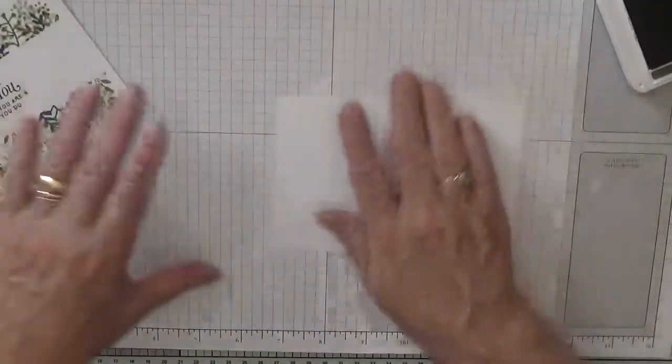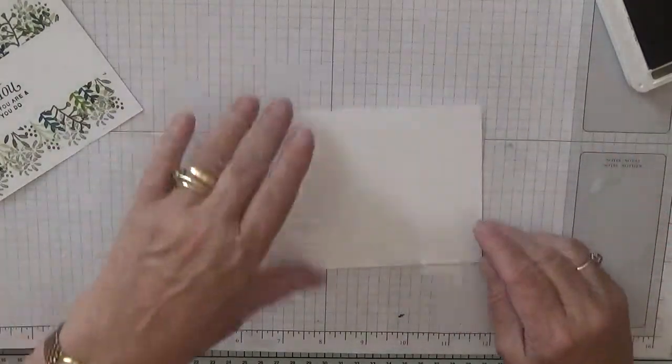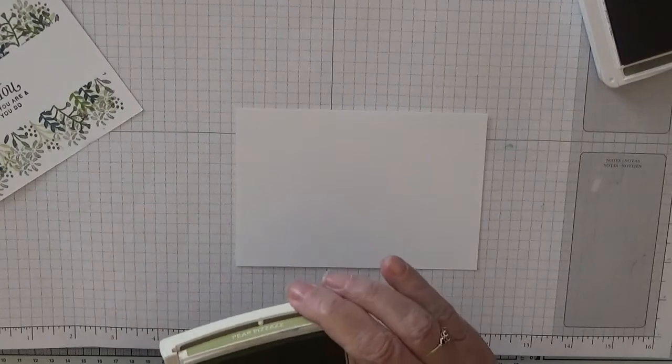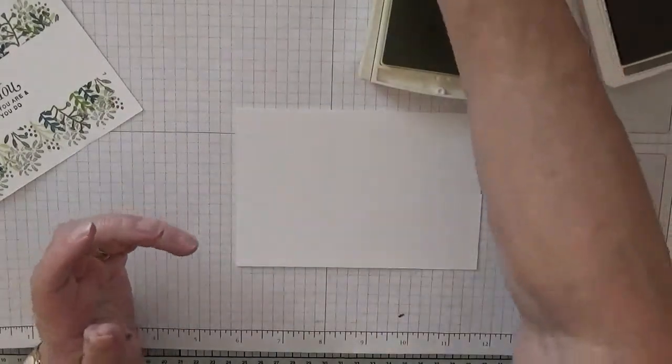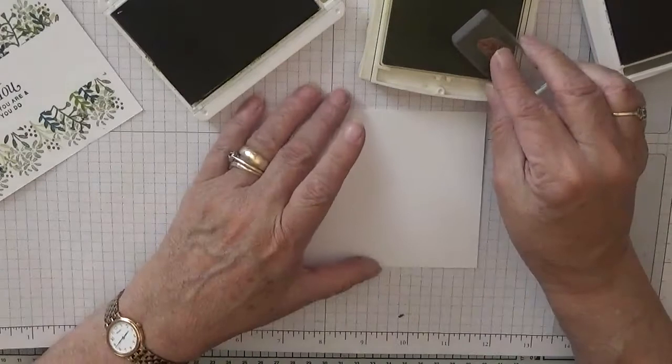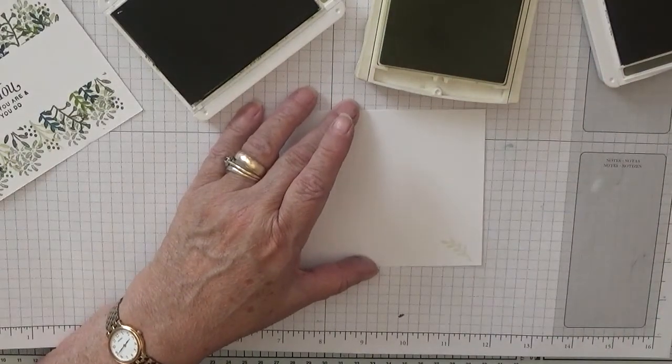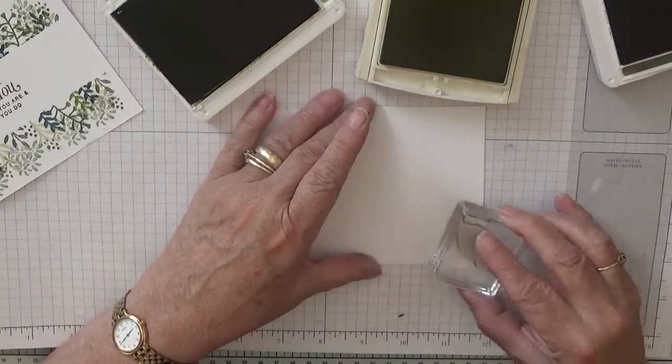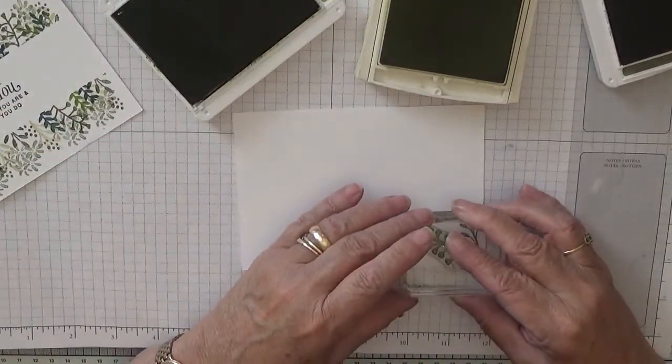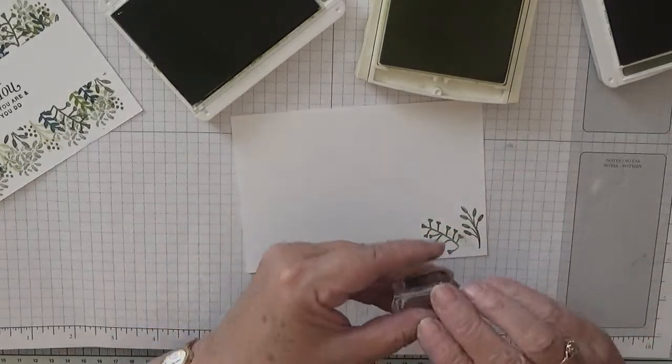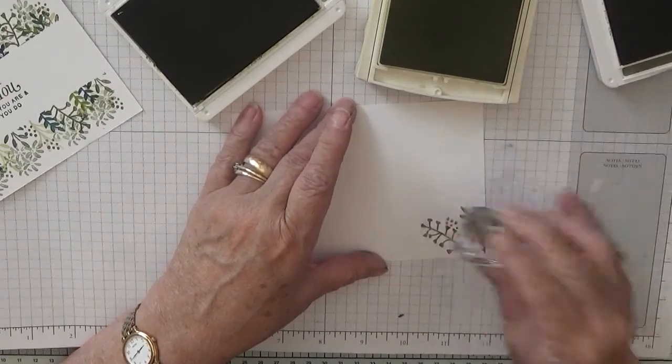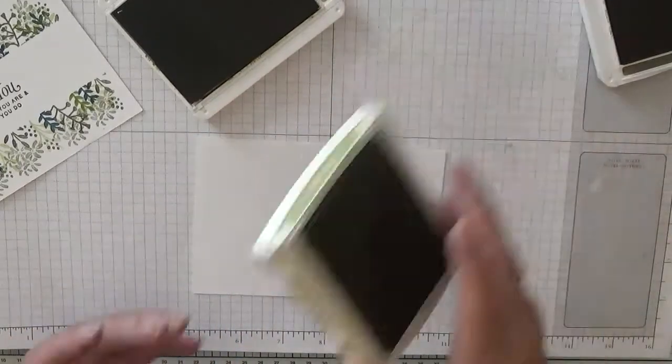Keep that out because I forgot to do this. So what I'm going to do, I've marked it, turn it over. Use that, use some... what's this? Pear Pizzazz and some Old Olive. And just stick some leaves on the inside and some dots. Just like that. That will do nicely.